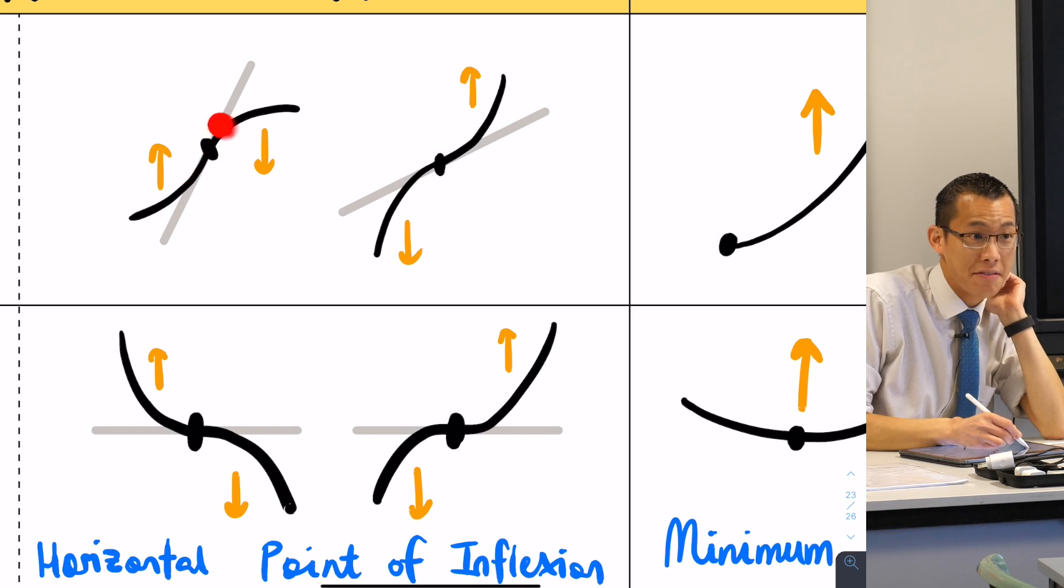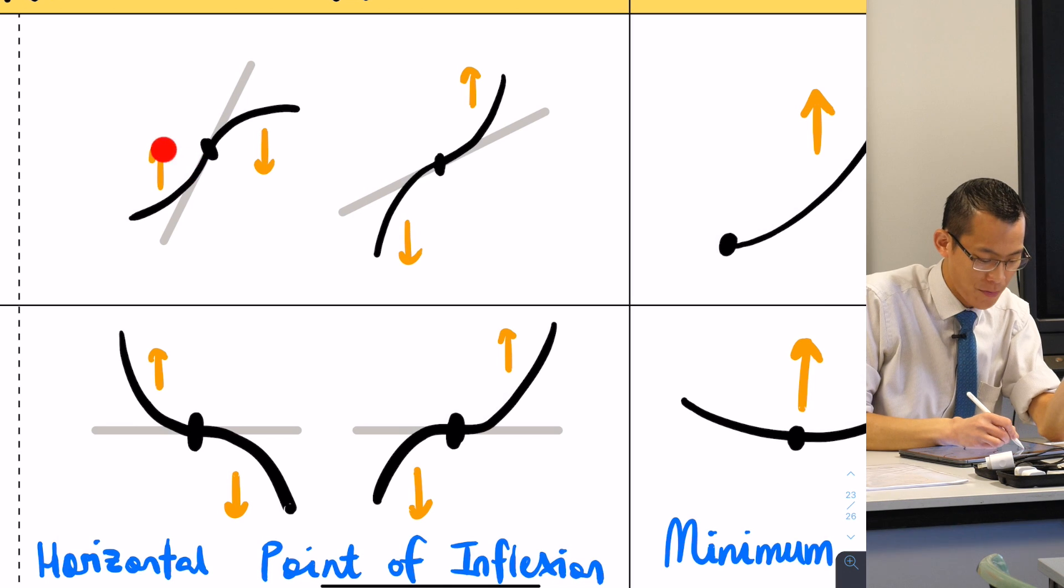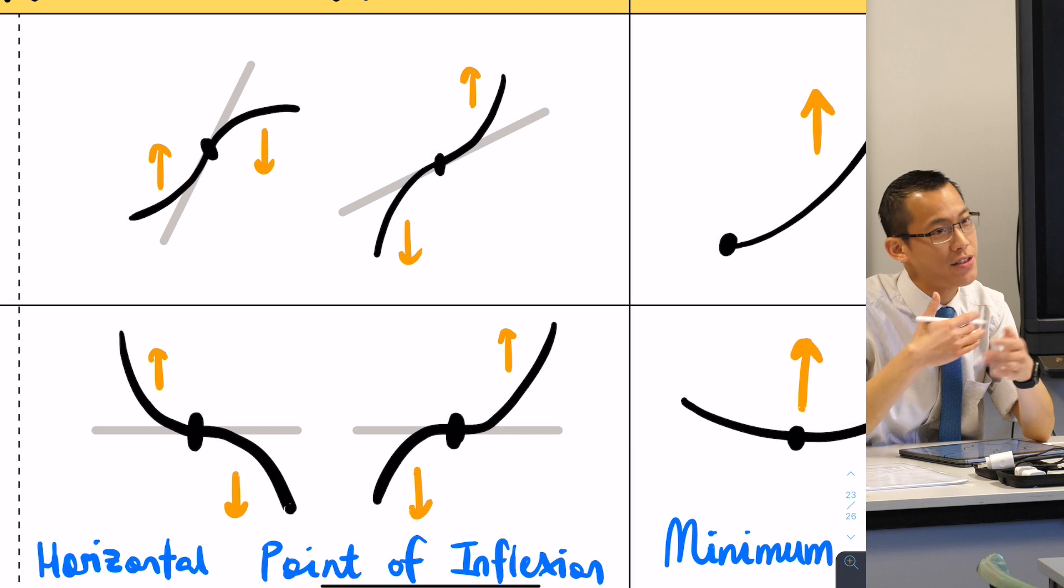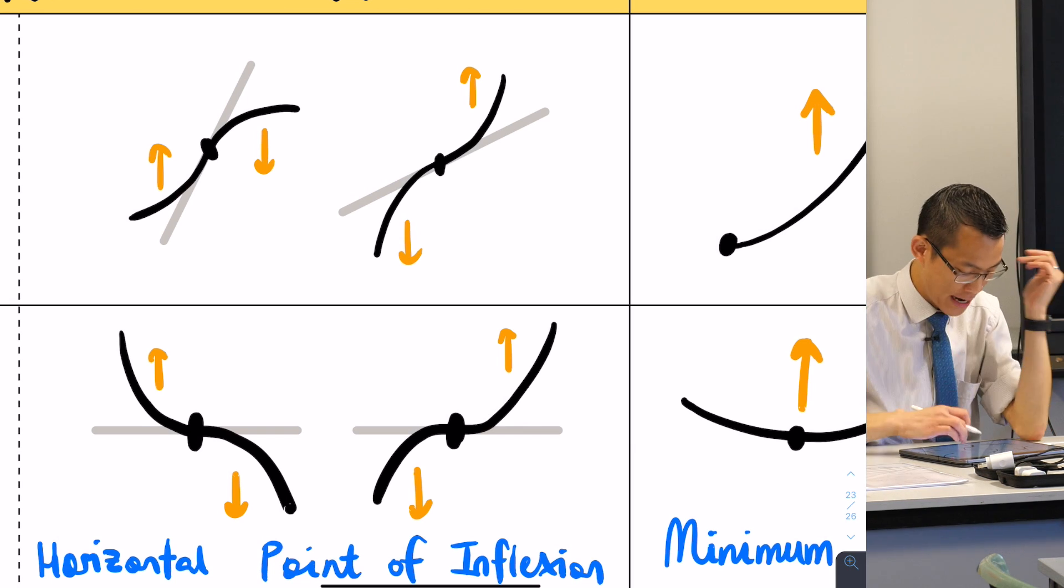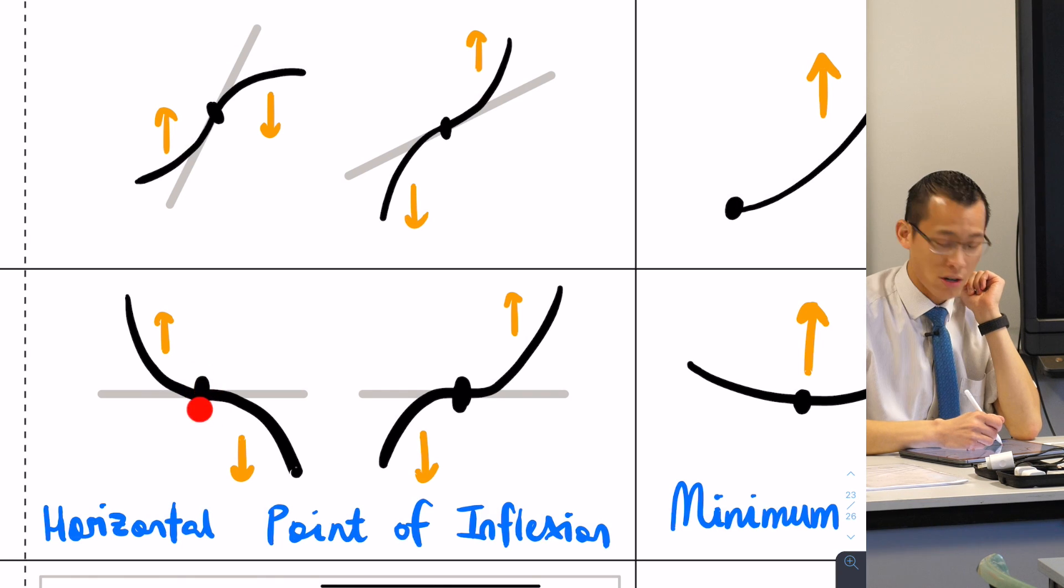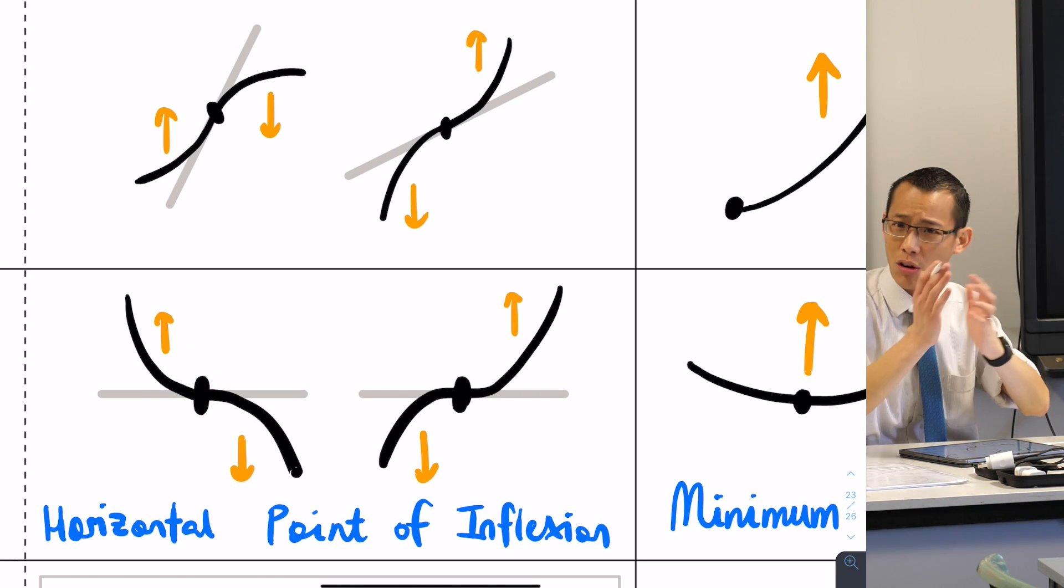Right smack bang in the middle, it's neither. It is neither concave up nor concave down. Same deal here. See that one spot in the middle? It's not concave up, it's not concave down. It's between those two concavities.